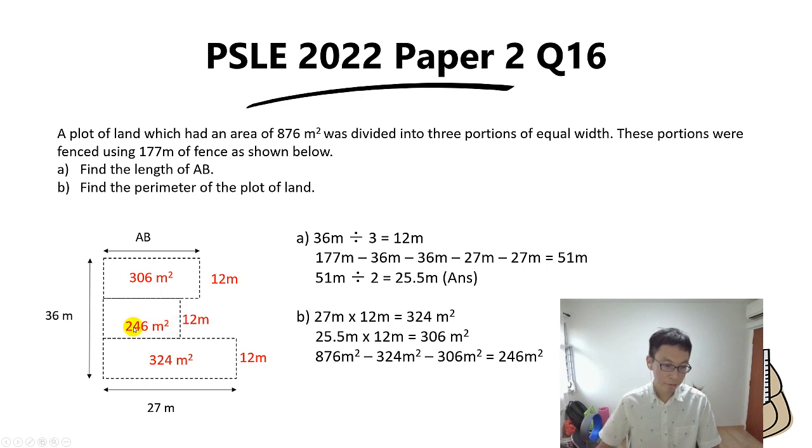So now you know the area, you also know the width. Can you find this length? Yes, we can. We take 246 divided by 12, you get 20.5 meters, and that's basically the length here.